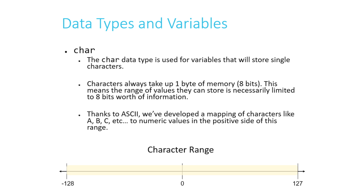Chars are used for variables that will store single characters. Char is short for character — sometimes you might hear people pronounce it as 'car.' Characters always take up one byte of memory, which is just eight bits, so they can only fit values in the range of negative 128 to 127. Thanks to ASCII, it was long ago decided to map those positive numbers from 0 to 127 to various characters on our keyboard. Capital A maps to 65, lowercase a is 97, and the character 0 is 48.